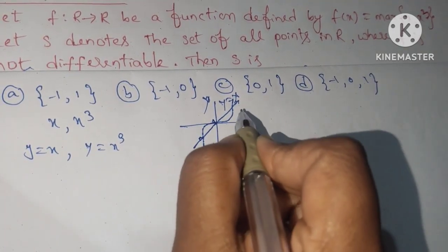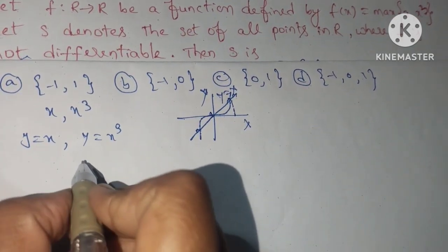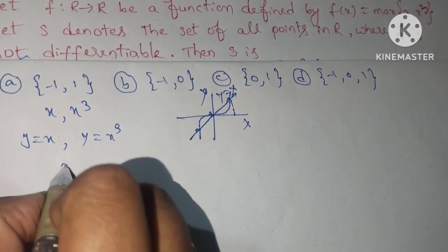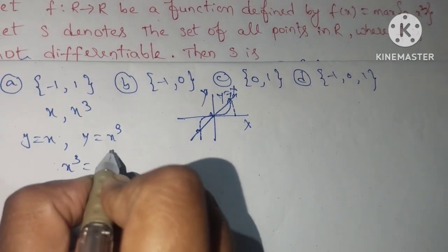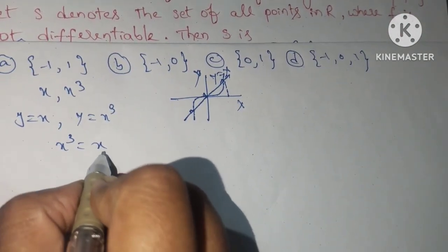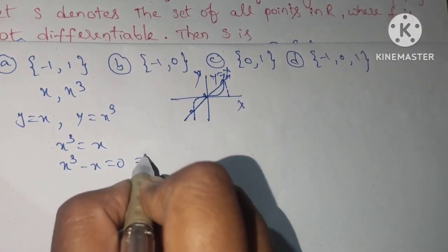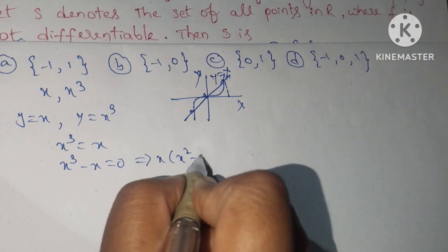I think we are getting three points. How do we get them? What are the three points? Just check: equate x³ = x. Bring x to the left hand side, you get x³ - x = 0.